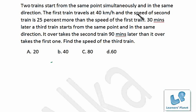Two trains start from the same point simultaneously in the same direction. The first train travels at 40 km per hour and the speed of the second train is 25% more than the first train. So it's 50 km per hour.